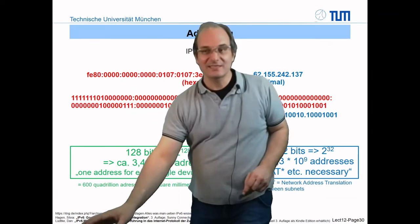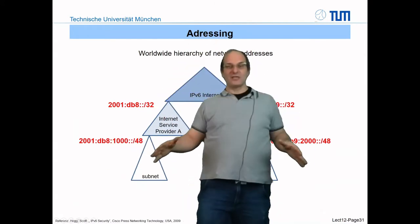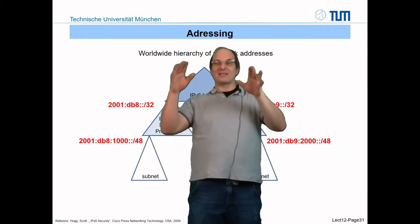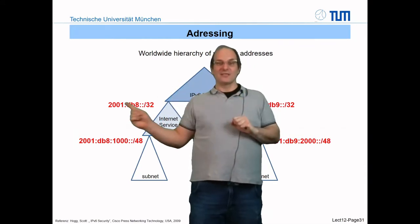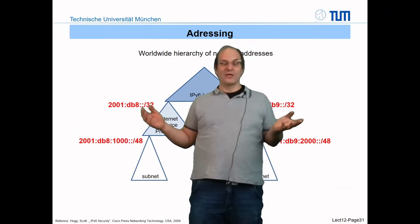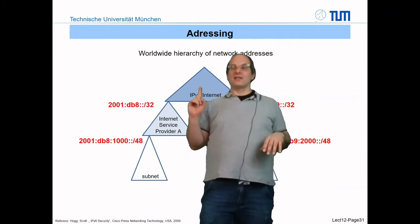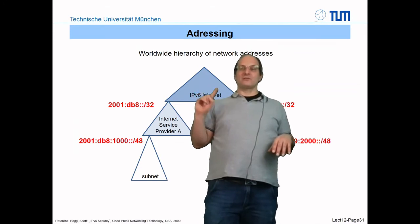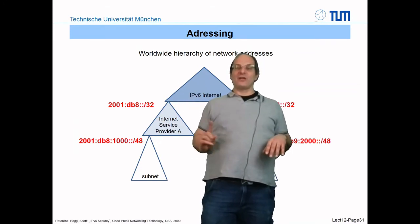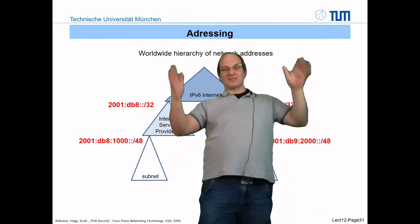IPv6 also brings a hierarchy of different network structures. Similar to IPv4 with slash notation, you can take a portion of the address for network identification — for example, a portion for the whole internet, a portion for the provider, and a portion for the local network. This allows structured allocation of the enormous IPv6 address space.